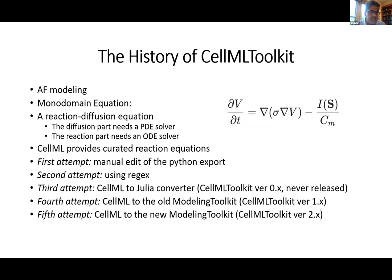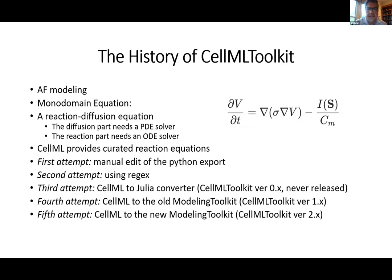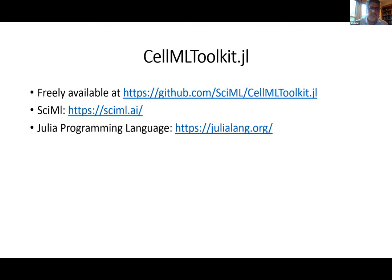The third attempt was to convert to plain Julia, which worked fine — that's what I call CellML toolkit version zero. The fourth attempt, released last year, converted to ModelingToolkit, giving all the benefits of the SciML ecosystem. There is now a new version 2.4.4 of the ModelingToolkit.